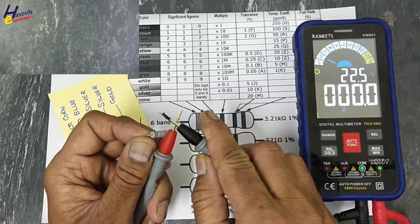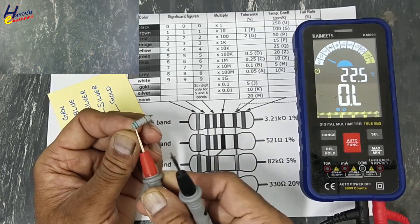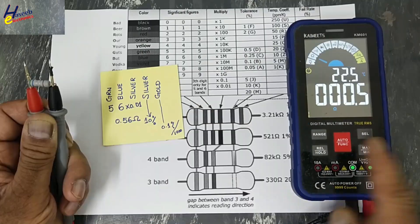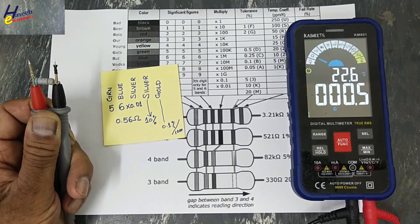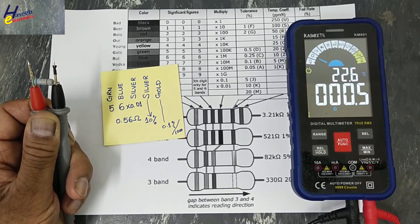Multimeter error: zero. 0.5 ohm. 0.5 ohm. Thanks for watching. Assalamualaikum warahmatullahi wabarakatuh.